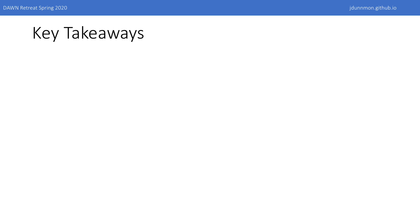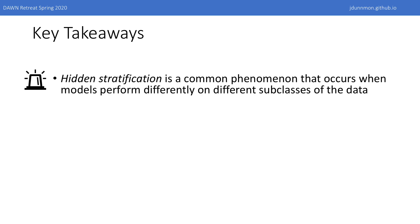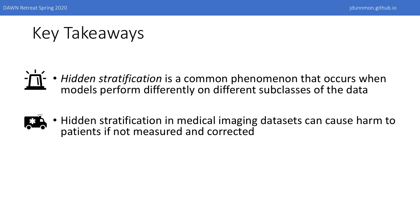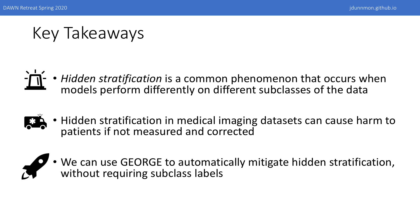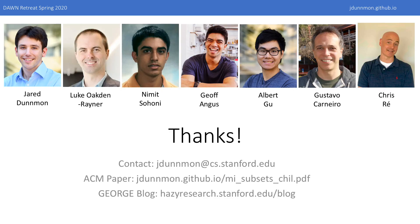In the end, the key takeaways are as follows. First, hidden stratification is a common phenomenon that occurs when models perform differently on different subclasses of the data. Second, hidden stratification in medical imaging datasets can cause harm to patients if not measured and corrected. And third, we can use George to automatically mitigate hidden stratification without having to know anything about the subclasses ahead of time. Moving forward, we're excited to continue teasing apart the causes of hidden stratification and the ways in which we can mitigate it, and apply our method to make models more robust on a broader variety of datasets and tasks. Thanks for taking the time to listen — make sure to check out our blog post and feel free to reach out.